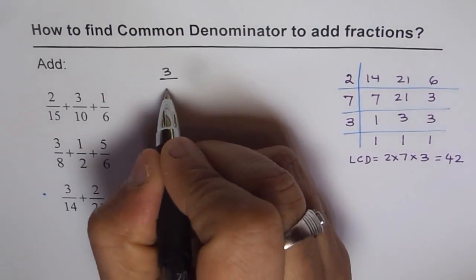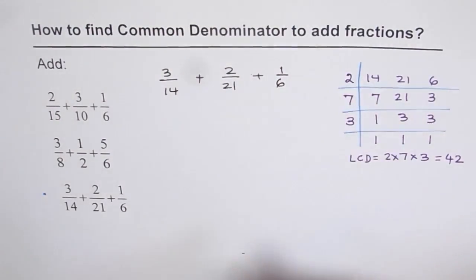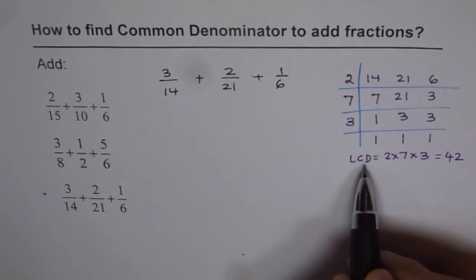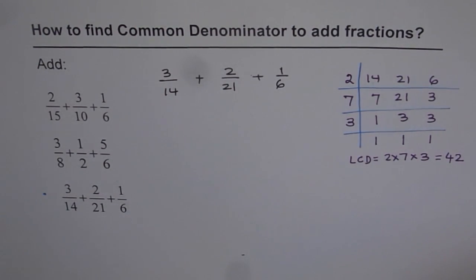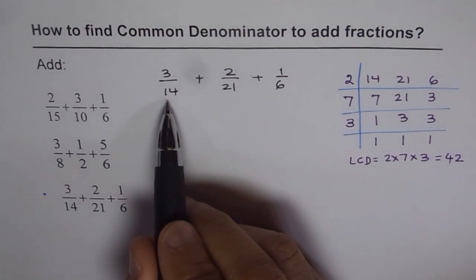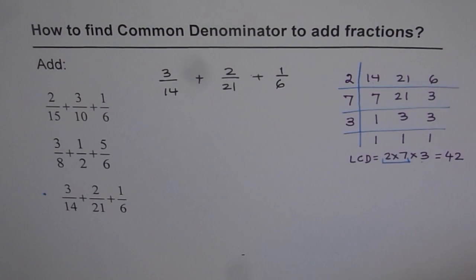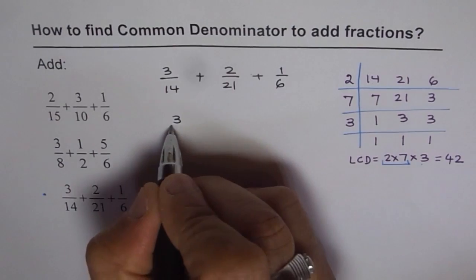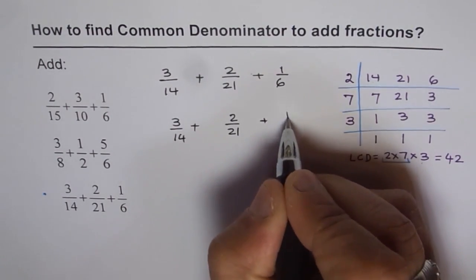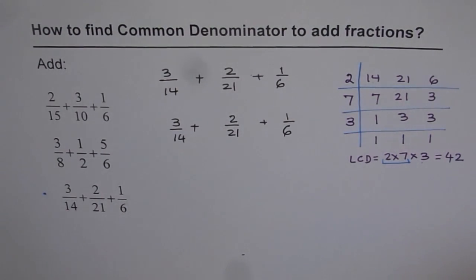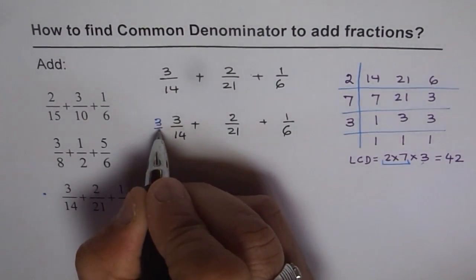Now we know the common denominator. Let's add the three fractions: 3 over 14 plus 2 over 21 plus 1 over 6. We already know the lowest common denominator is 42. To make 42 from 14, we need to multiply 14 by 3. So I'll rewrite all three fractions and figure out what to multiply them with to get the common denominator. For the first one, 14 should be multiplied by 3 to get 42, so we multiply by 3 over 3.